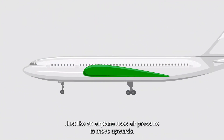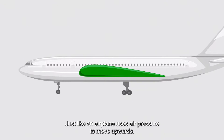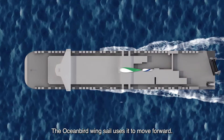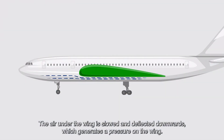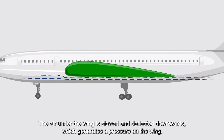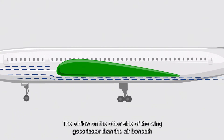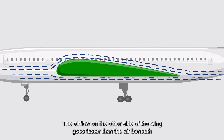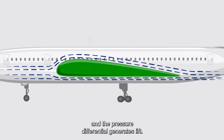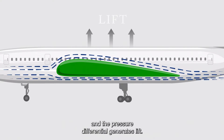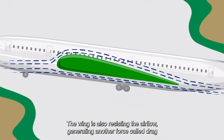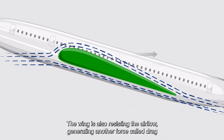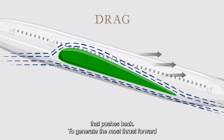Just like an airplane uses air pressure to move upwards, the Oceanbird wingsail uses it to move forward. The air under the wing is slowed and deflected downwards, which generates a pressure on the wing. The airflow on the other side of the wing goes faster than the air beneath, and the pressure differential generates lift. The wing is also resisting the airflow, generating another force called drag that pushes back.